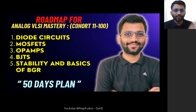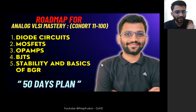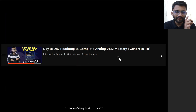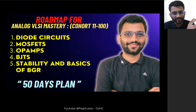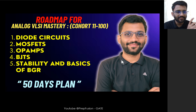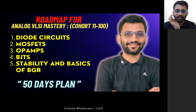In this video we are going to discuss the roadmap to complete Cohort 11 to 100. We already made the roadmap to complete 0 to 100 four months back — there was a 30-day plan for BTech students and a 60-day plan for MTech students. But in this one, both MTech and BTech students can prepare simultaneously, and the plan is of 50 days.